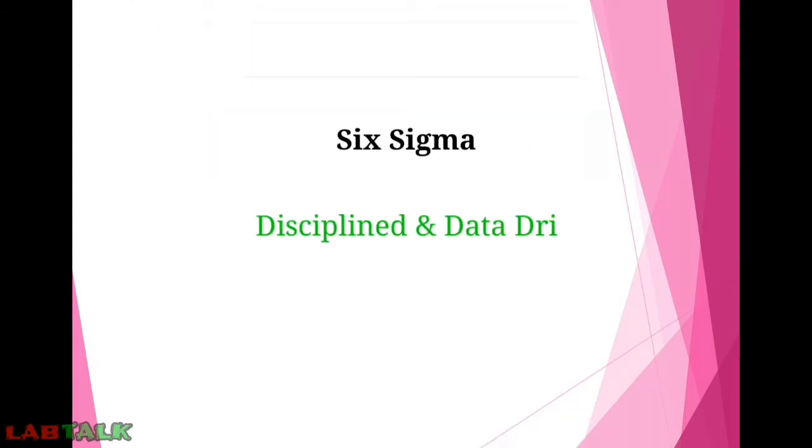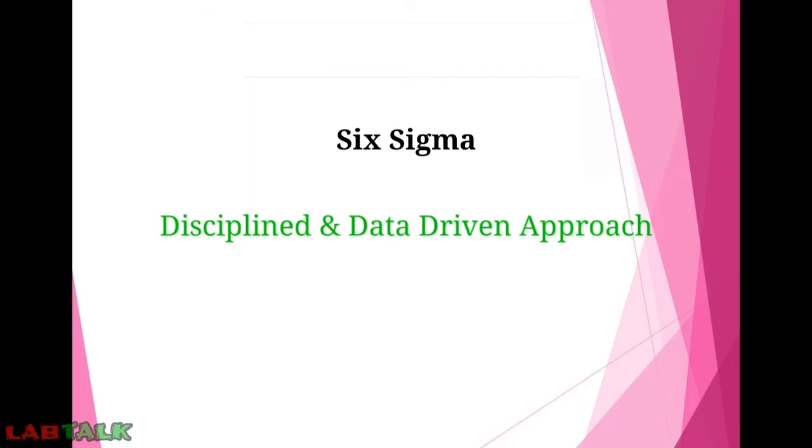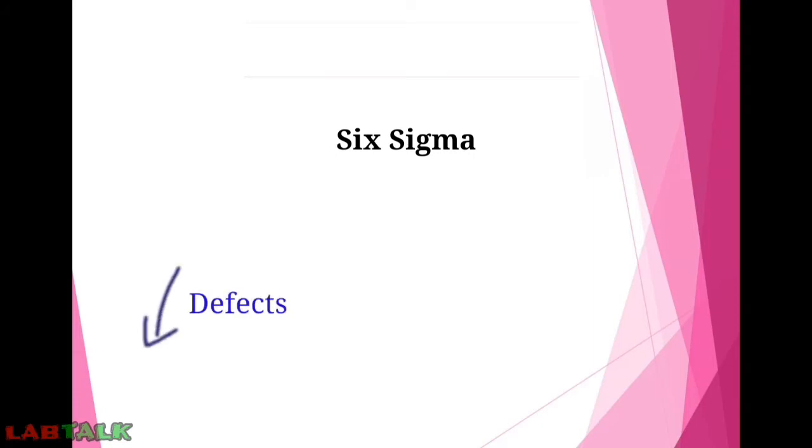Six Sigma is a disciplined data-driven approach and methodology for eliminating defects in any process, from manufacturing to transactional and from product to service. From this we can see Six Sigma is a methodology where we can find out the defects and eliminate them. Basically, this is a quality management methodology where the aim is to improve quality.